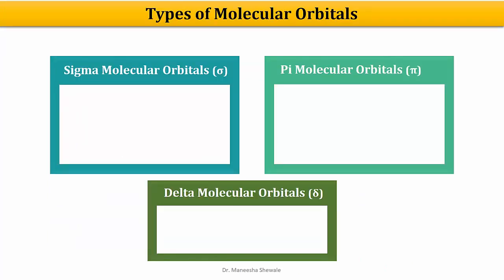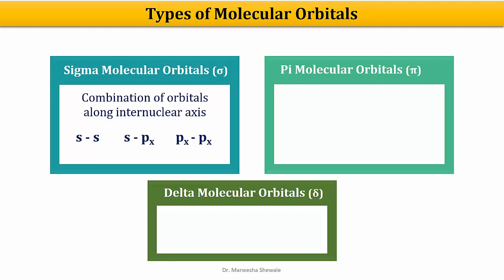The different types of molecular orbitals — sigma, pi and delta — are formed by the combination of different types of atomic orbitals. When the combining atomic orbitals approach along the internuclear axis, we get the formation of sigma molecular orbitals. The combinations can be SS, SPx, and PxPx.